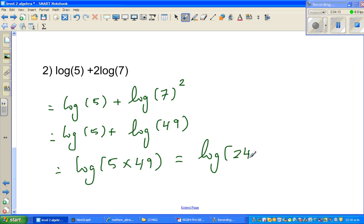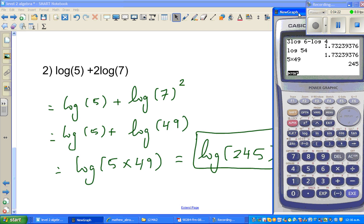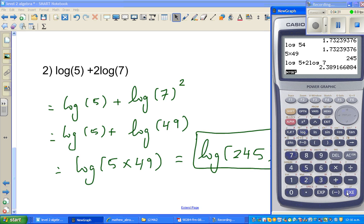So, this is writing the answer as a single logarithm or log. So, how do we check your answer? Again, the same thing. So, you can type in log of 5, log 5 plus 2 log 7. That will be the huge number 2.389 whatever. And, then you press log of 245. That will give you the same answer. And, if the answers are same, you are fine.